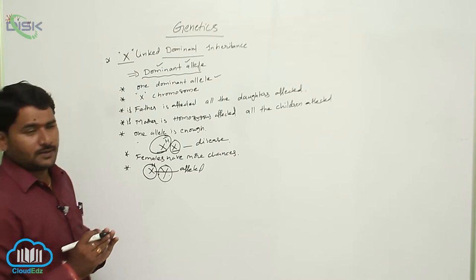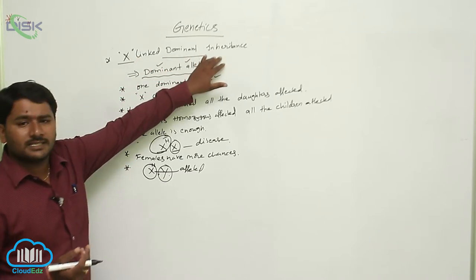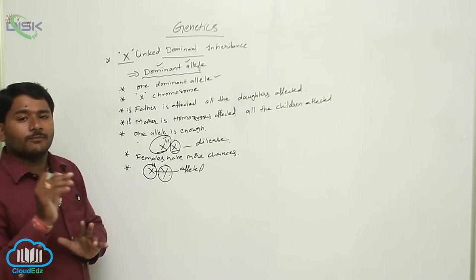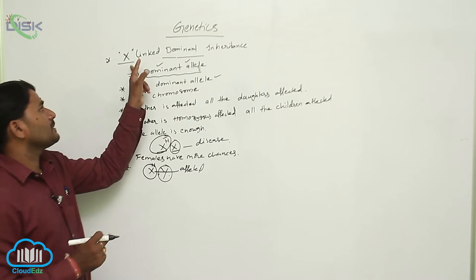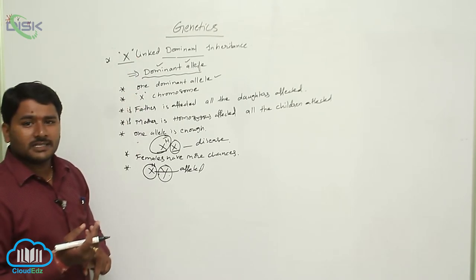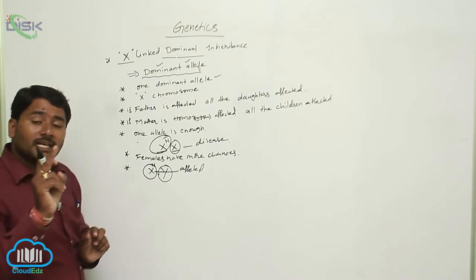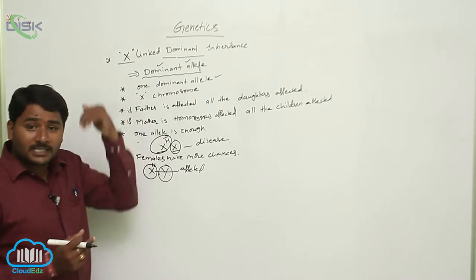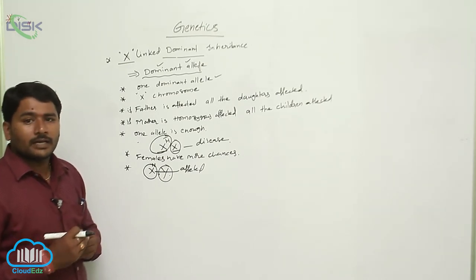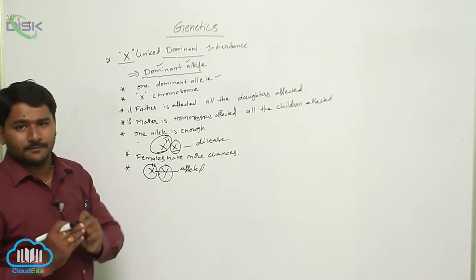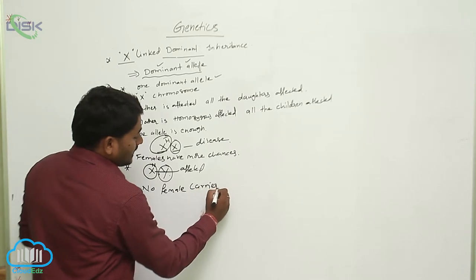Let us review X-linked dominant inheritance. It is the mode of inheritance of a dominant allele from one generation to another, where the dominant allele is present on the X chromosome. One dominant allele is enough to cause the disease — unlike X-linked recessive inheritance which requires two recessive alleles in a female. Importantly, there are no female carriers in X-linked dominant disorders.